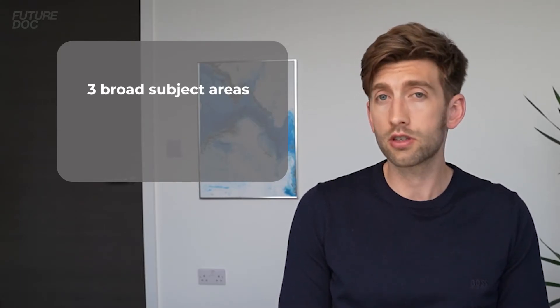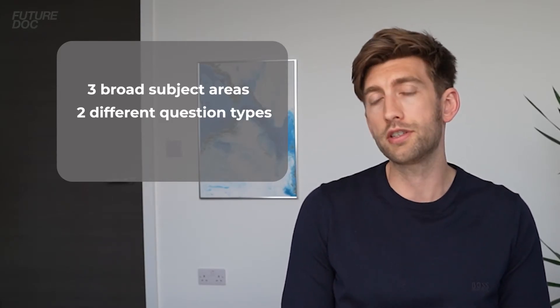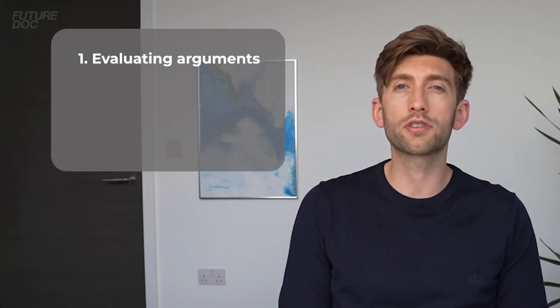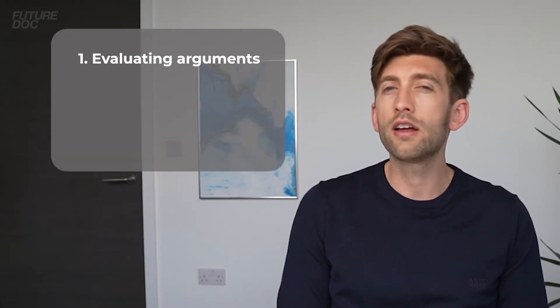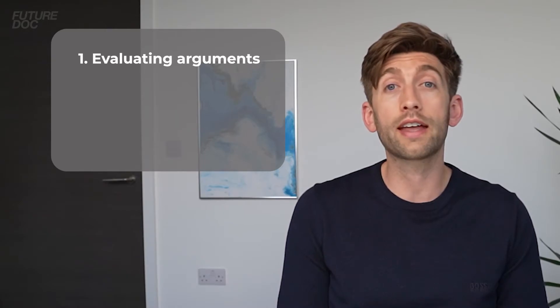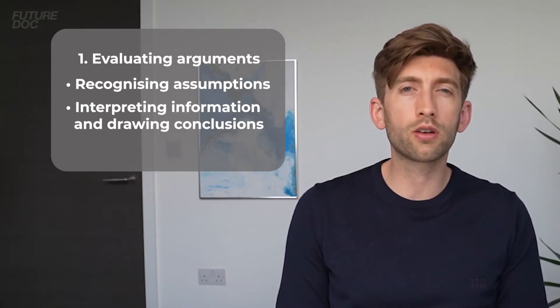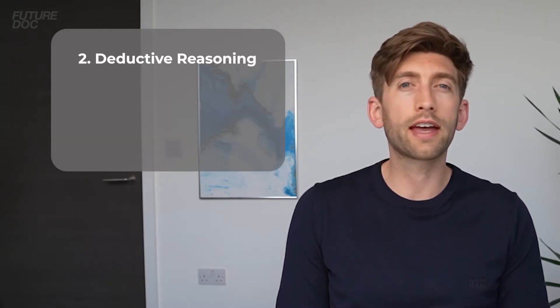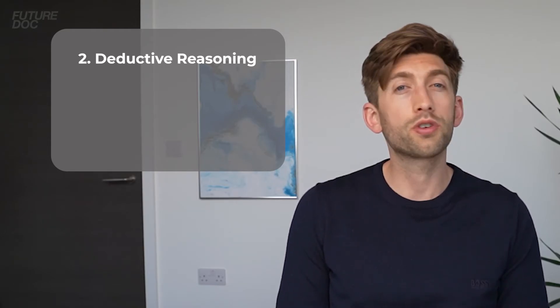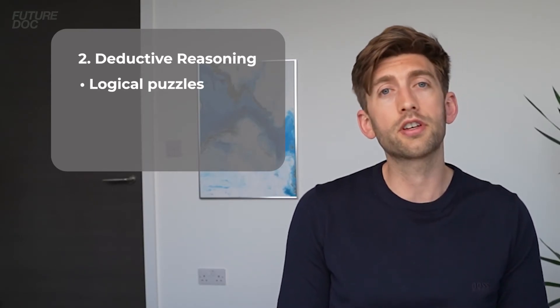The decision-making has three broad subject areas, each containing two question types, usually combining skills from quantitative and verbal reasoning. The first is evaluating arguments, making up about 35% — roughly 10 to 11 questions. Within this area the two question types are recognising assumptions and interpreting information or drawing conclusions. The second broad area is deductive reasoning, again about 35% or 10 to 11 questions, with question types of logical puzzles and syllogisms.